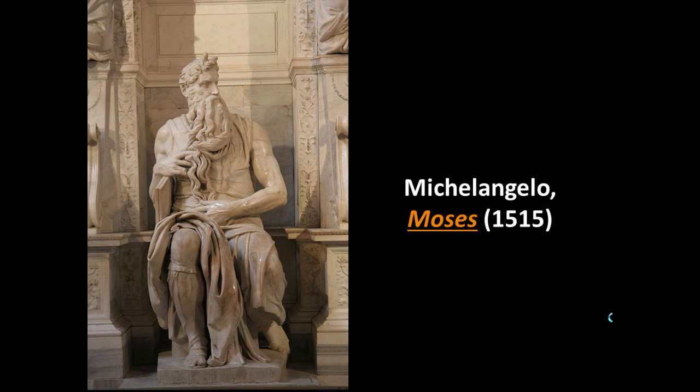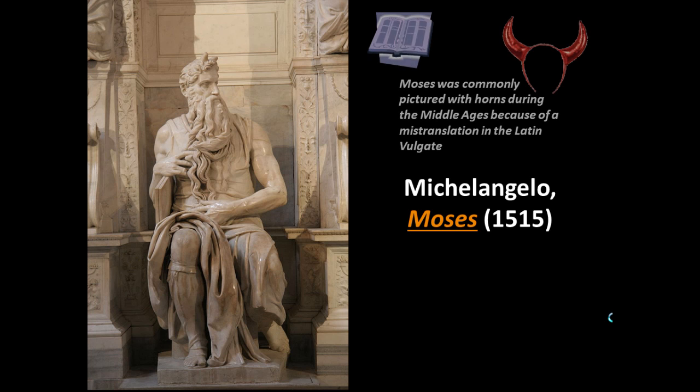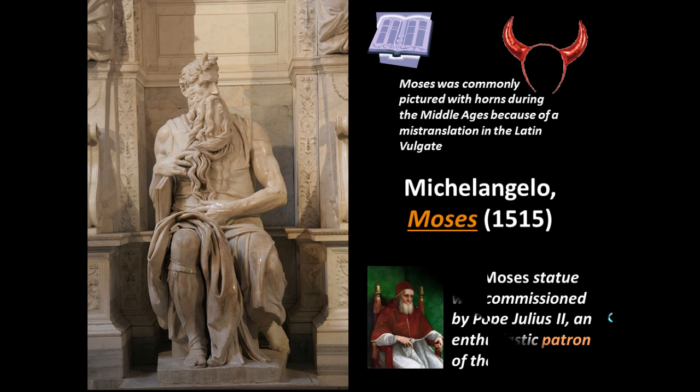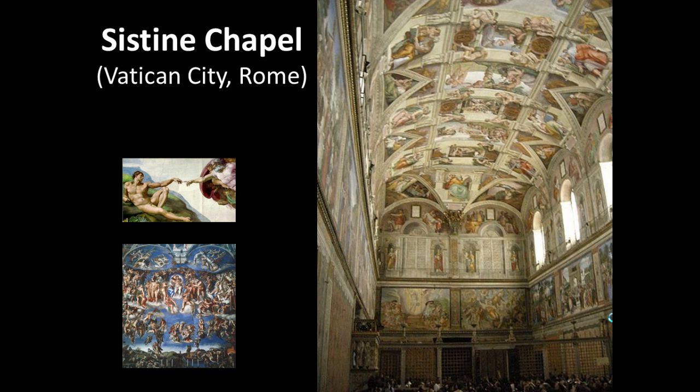Michelangelo's Moses portrays him with horns due to a mistranslation in the Latin Bible. This was created for a papal tomb — the tomb of Julius II. Keep in mind that the Medici family were big patrons of the arts, and so was the Catholic Church.